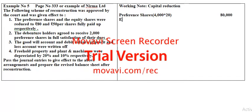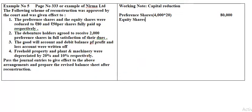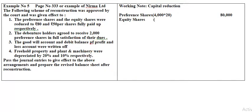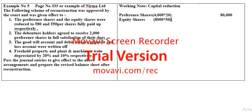For equity shares: reduced from rupees 100 to rupees 50 — reduction is rupees 50 per share. They are having 8,000 equity shares. 8,000 into 50 = 4,00,000. That is the capital reduction on equity shares — 4,00,000.